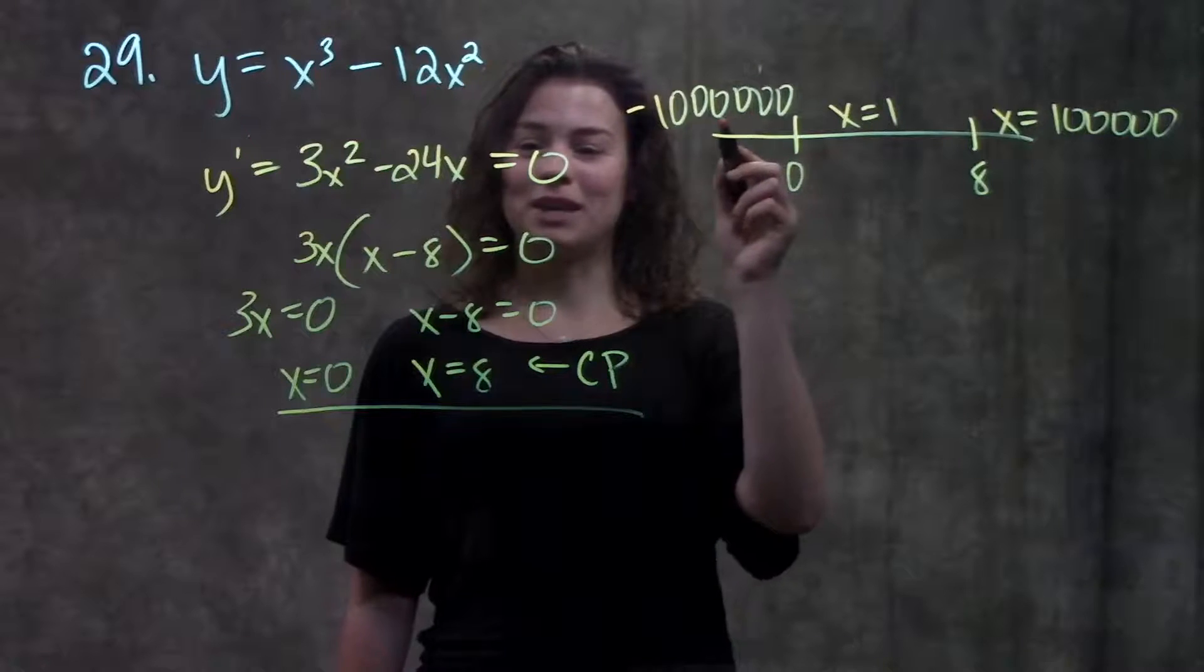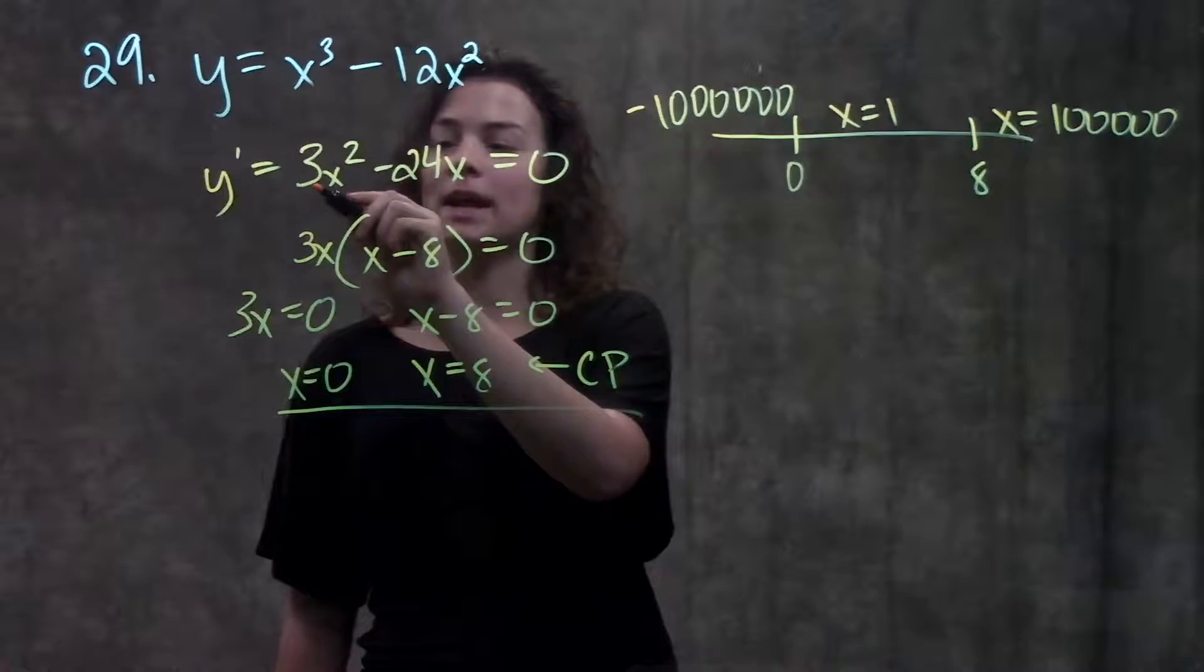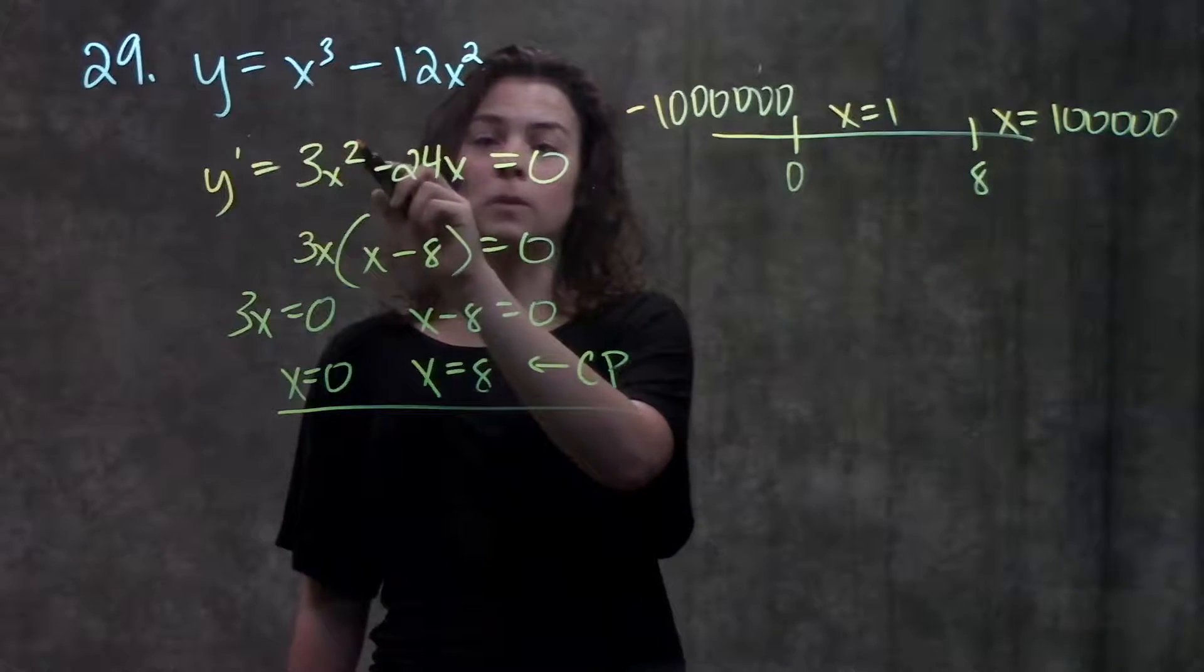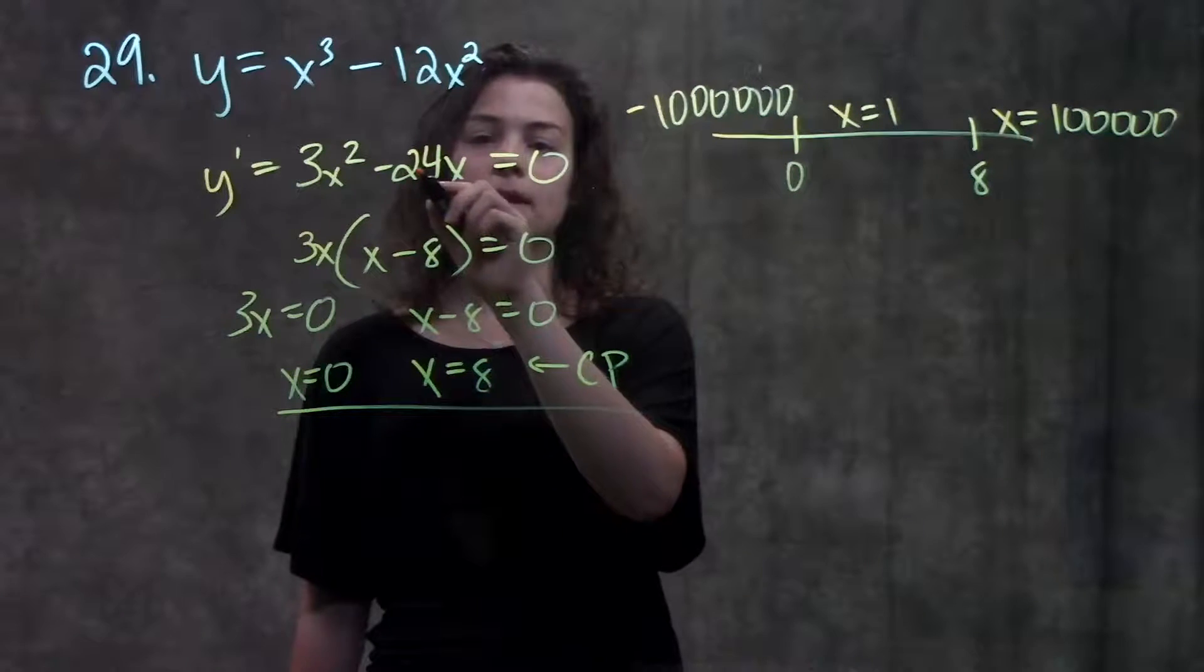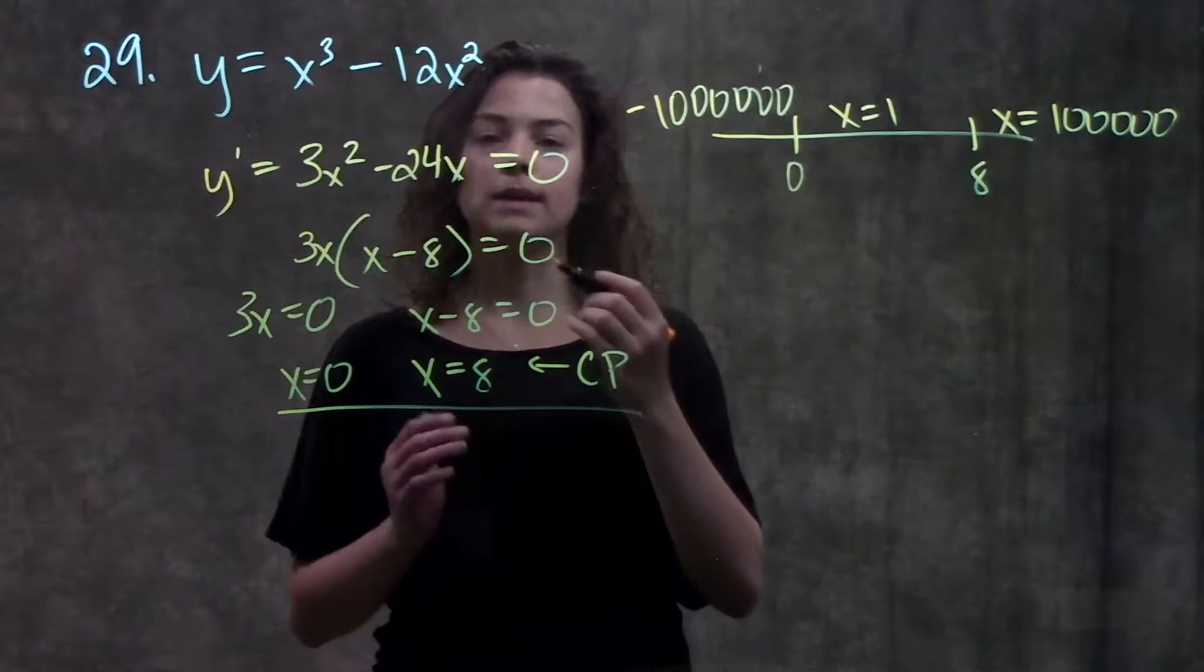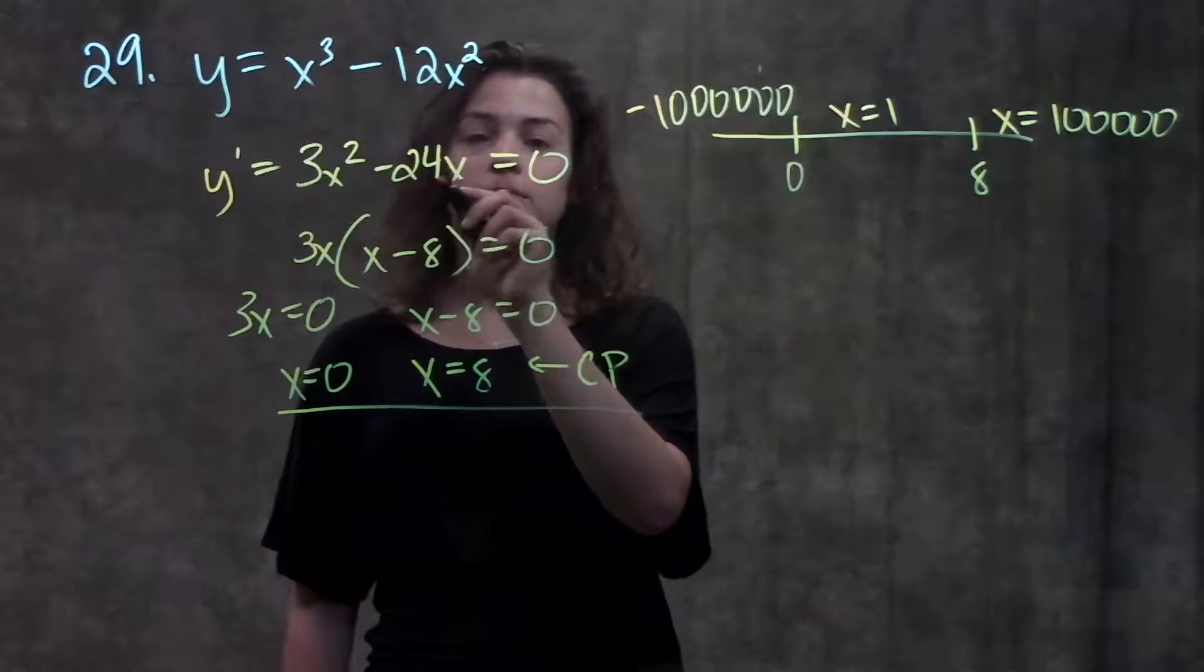When I plug in a really huge negative number into my derivative, I'm going to get 3 times negative number squared, that'll give me a positive value. And then minus, this will become negative, because 24 times a negative will give me negative. Minus a negative becomes positive.